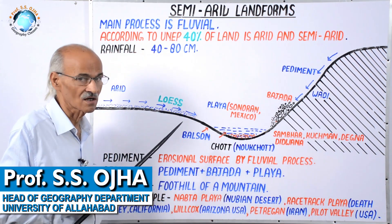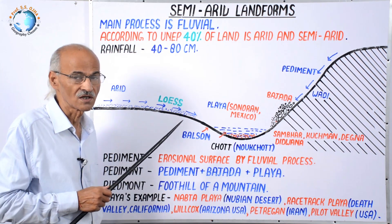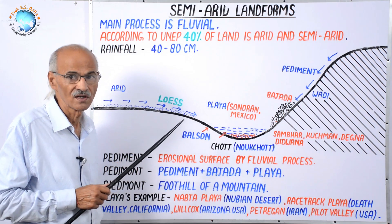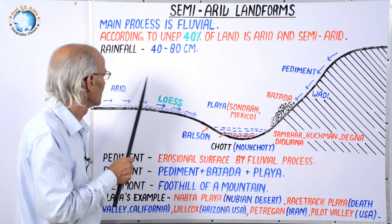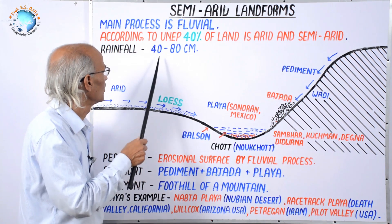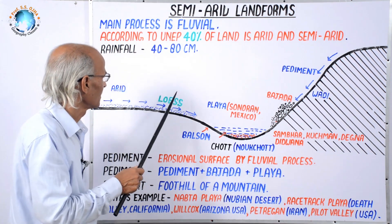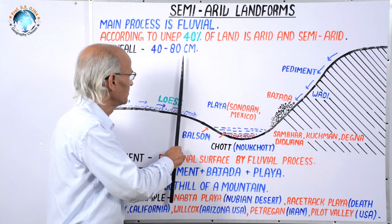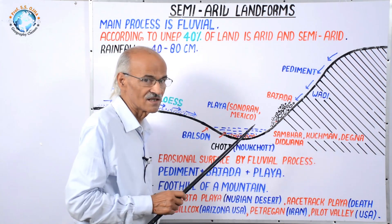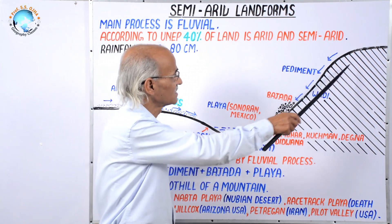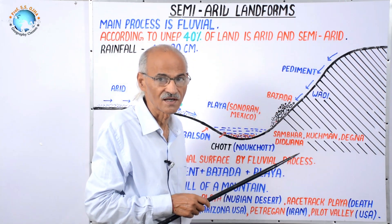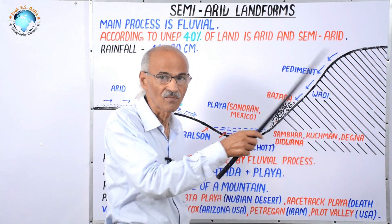According to Thornthwaite, to keep the sequence from arid to humid in mind: arid region means rainfall below 40 cm; if rain is between 40 and 80 cm, it is semi-arid; when rain exceeds that, it becomes sub-humid, then humid, then per-humid.